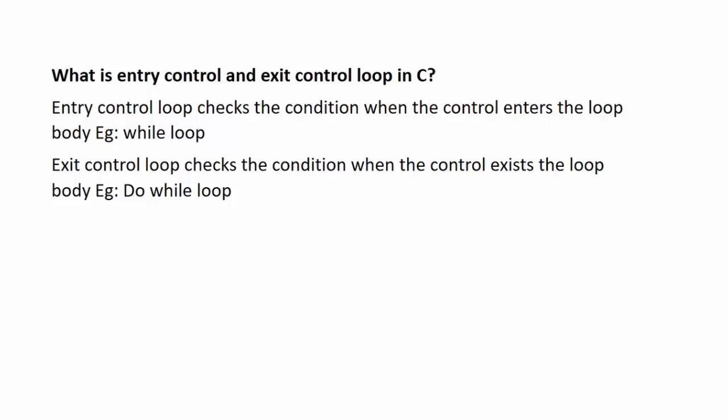Next question: what is entry control and exit control loop in C? Entry control loop checks the condition when the control enters the loop. Example: while loop. In a while loop, first we write the while keyword and then in parentheses we give the condition — that is the entry condition. If the control evaluates the condition and it is true, then only the control enters the body of the while loop. But if the condition evaluates to false, then the loop body is not executed. So, while is an entry control loop.